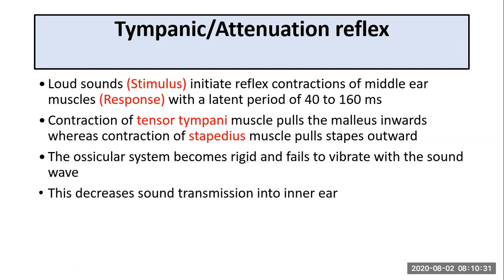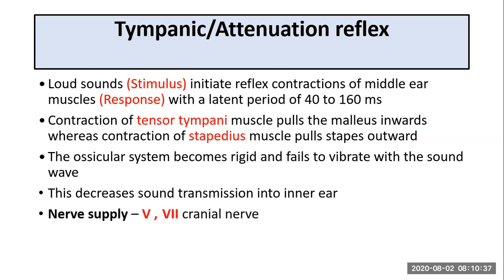This decreases sound transmission into the inner ear and it is attenuated — the intensity of the sound is reduced by 30 to 40 decibels. The nerve supply of these two muscles includes the 5th and 7th cranial nerves, that is the trigeminal and the facial nerve.